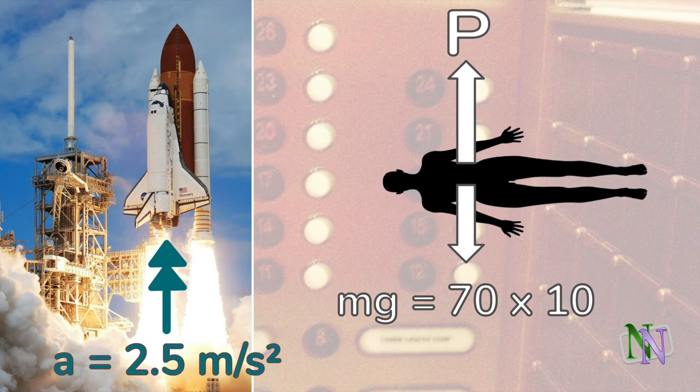These two, the weight and the contact force, are all the forces acting on her body. Combined, they cause her to accelerate at 2.5 metres per second squared.